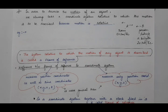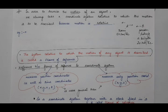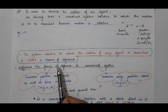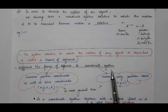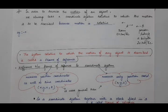As I mentioned in the previous lecture, motion is a relative term, not an absolute one. So we need a system relative to which the motion of any object can be described, and that system is known as a frame of reference. Now, how is this frame of reference different from the coordinate system? In the case of a coordinate system, it measures only the position coordinates of the object, not time.